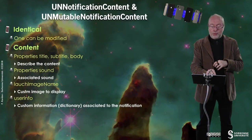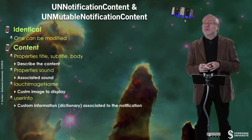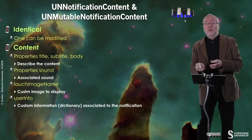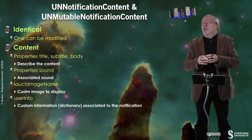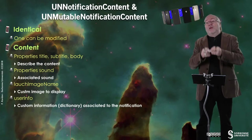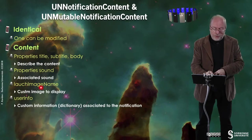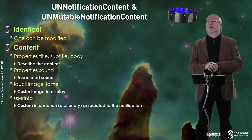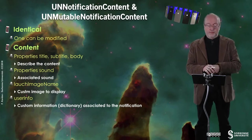The contents have properties: a title, a subtitle, and a body that describe the content. You also have a property sound — the sound associated to it — so you can change this. You can have the default sound for all notifications, but you can have a dedicated one. You can have a launch image, a custom image to be displayed. And you can also pass user information as a dictionary that will be associated to the notification and provide some information you want to pass along with it.